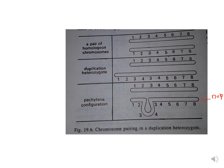During duplication, there is loop formation in one of the chromosomes so that bivalents are formed during the zygotene stage of meiosis. One chromosome is duplicated, and the loop forms in the duplicated chromosome — whereas in deletion, the loop formed in the normal chromosome.